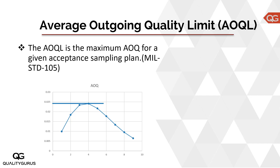The peak is at around 2.4%, which is slightly less than 2.5%. This sampling plan was selecting 80 pieces and accepting or rejecting the lot based on those 80 samples. If you get 3 or fewer defectives, you accept the lot; if you get more than 3 defectives, you reject it. Based on that, the peak of the AOQ curve is the AOQL — the Average Outgoing Quality Limit.